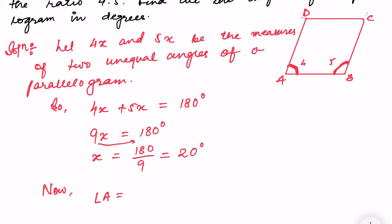Angle A equals 4x, which is 4 into 20 degrees, giving us 80 degrees. Since opposite angles of a parallelogram are equal, angle C is also equal to 80 degrees.